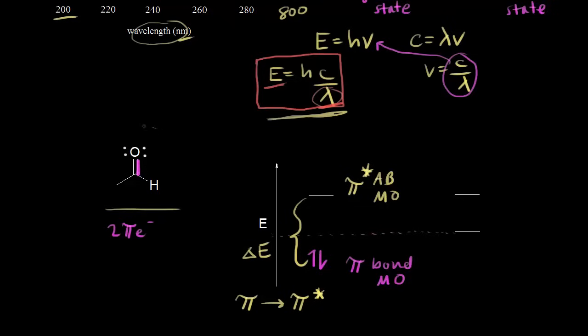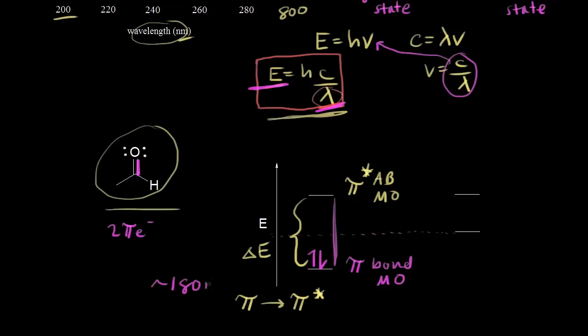The molecule absorbs energy, and that energy corresponds to a wavelength of light — the energy difference between the two orbitals. It turns out that this pi to pi star transition is approximately 180 nanometers, which is below the range typically measured when using a UV-Vis spectrophotometer.